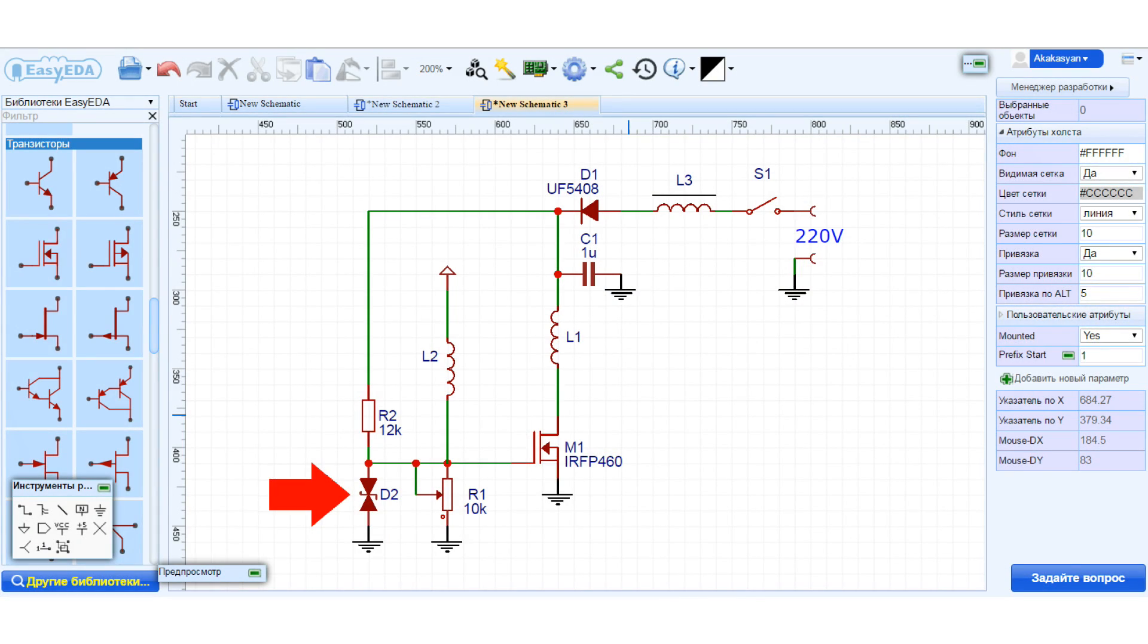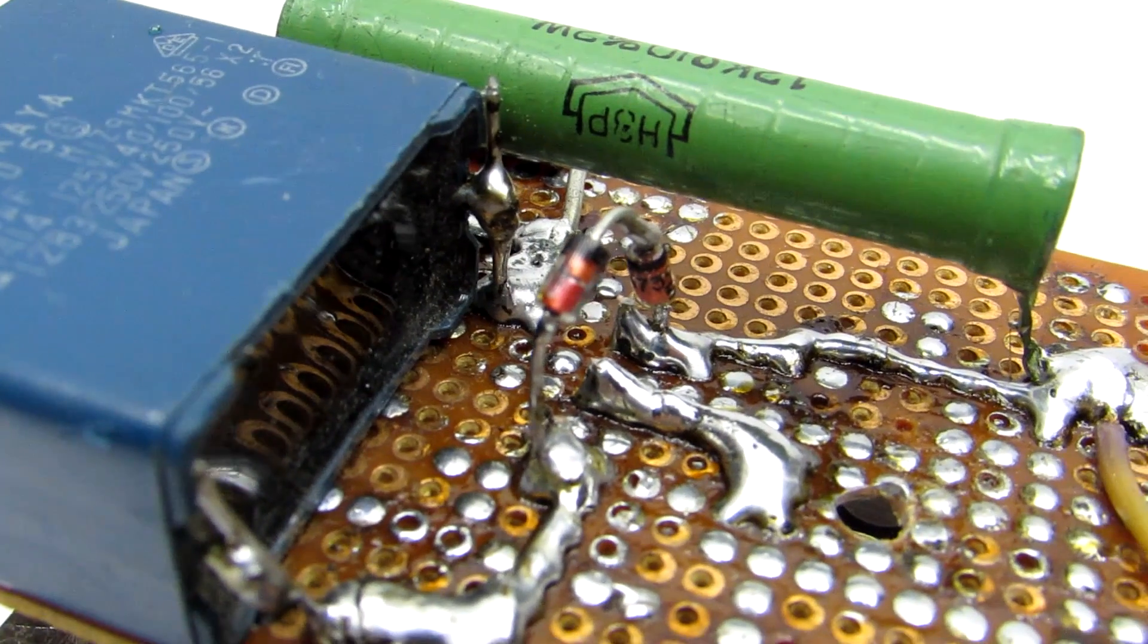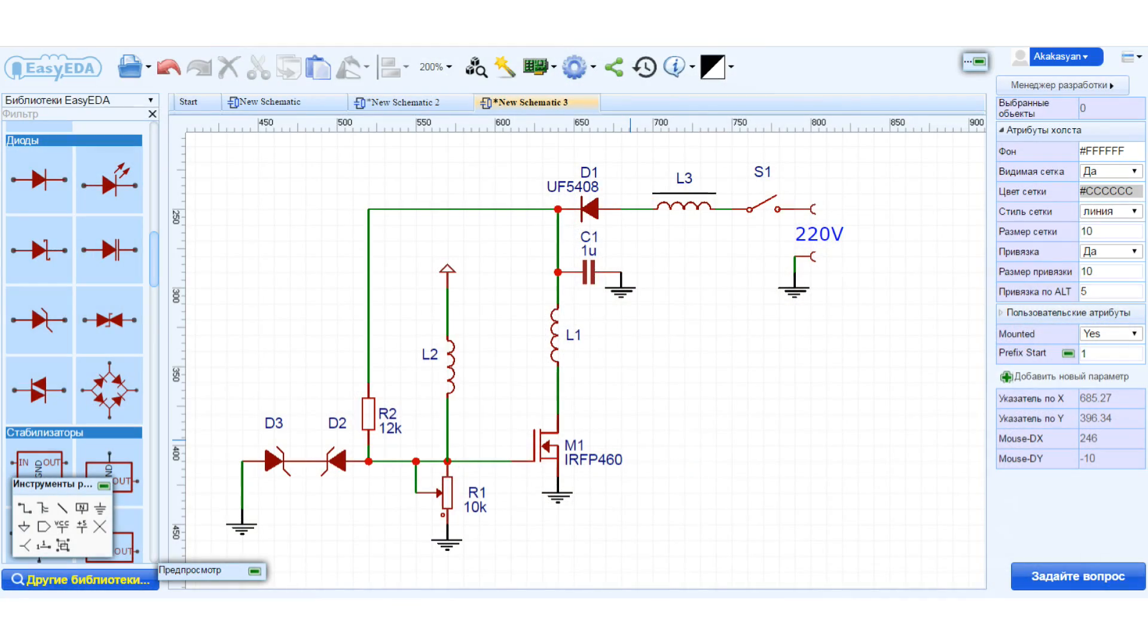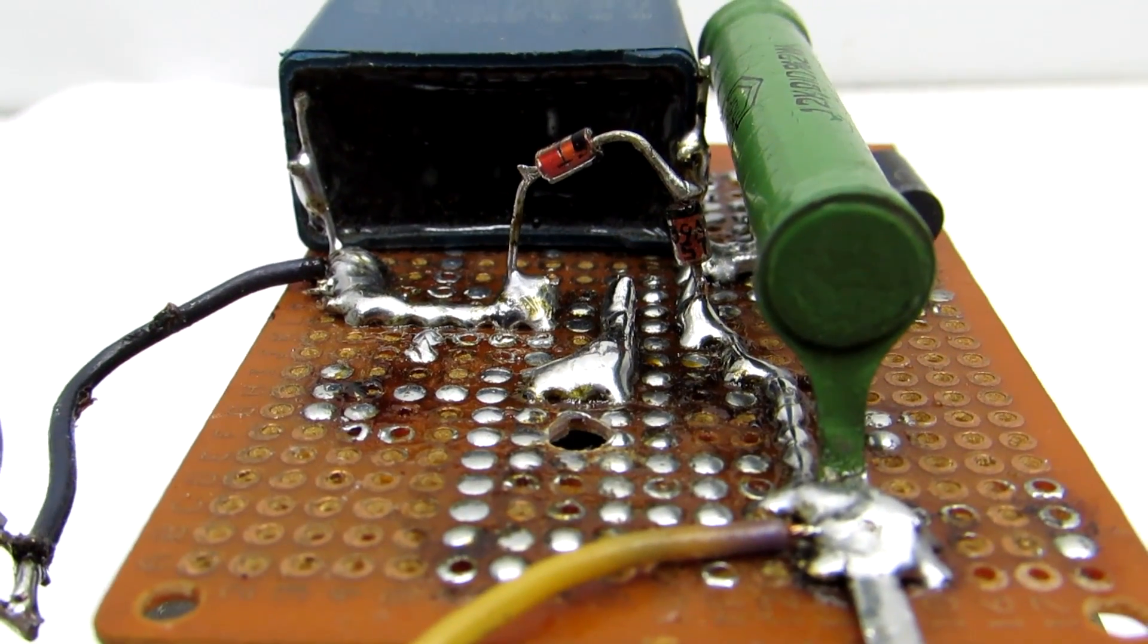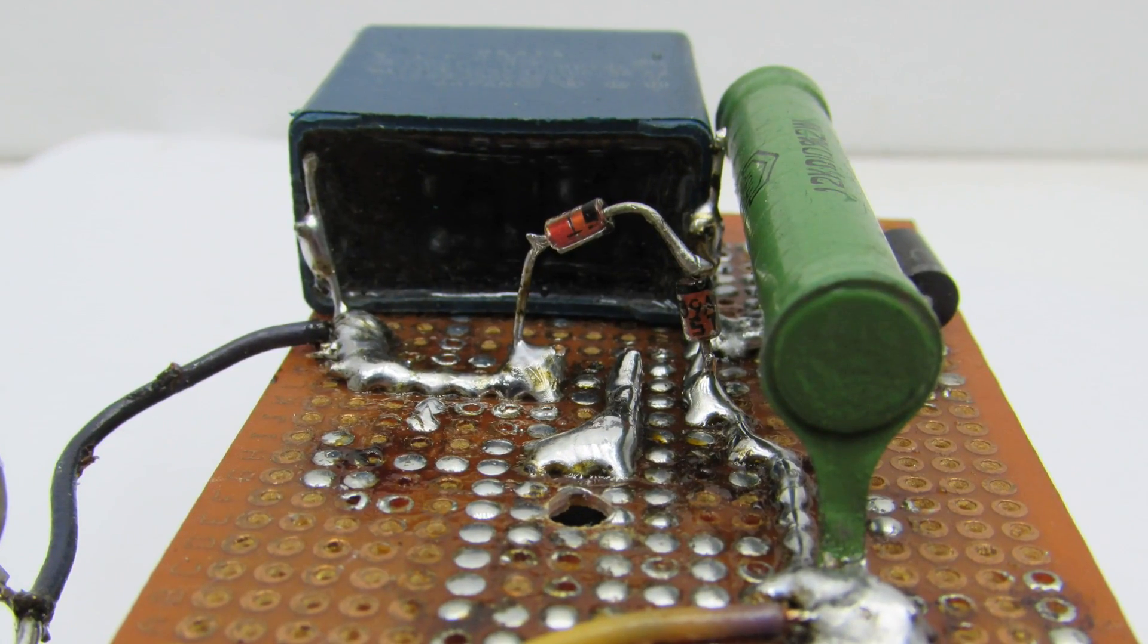Here is a symmetric protective Zener diode, but it can be replaced by two conventional Zener diodes connected in series. In this case, the voltage stabilization of each Zener diode should be from 6 to 12 volts. It is advisable to use one watt Zener.